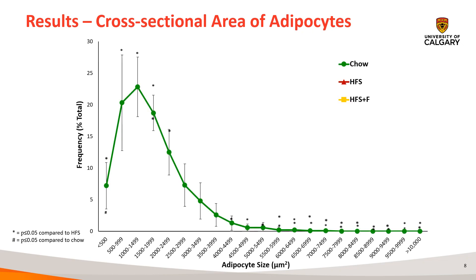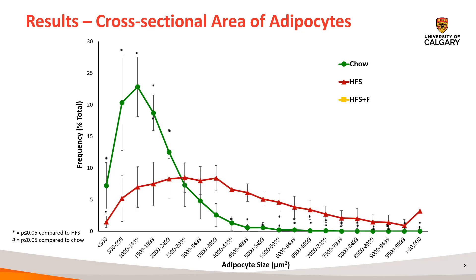Then we have this frequency graph. We see that the chow group has lots of smaller adipocytes rather than larger cells. Compared to the high-fat, high-sucrose group here in red, there were significantly more smaller cells in the chow. There were also significantly more larger cells in the high-fat, high-sucrose group compared to both the chow and the fiber group shown here in yellow.